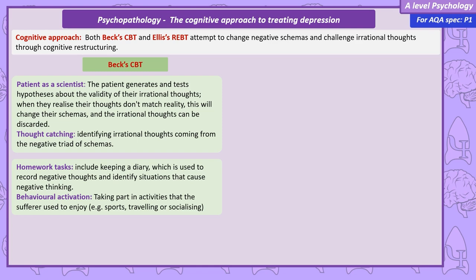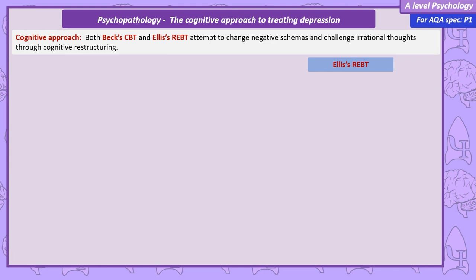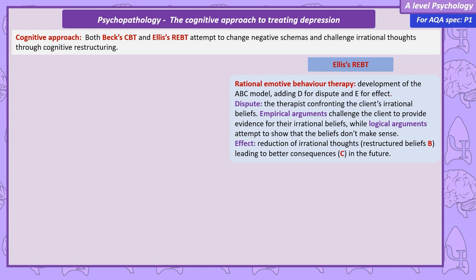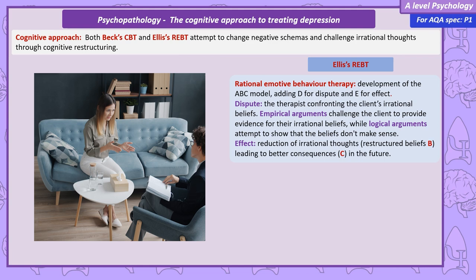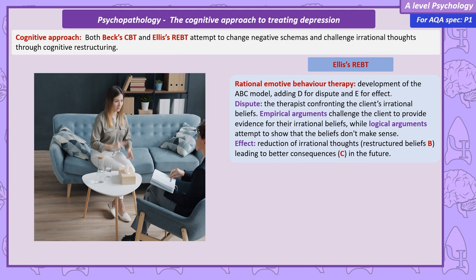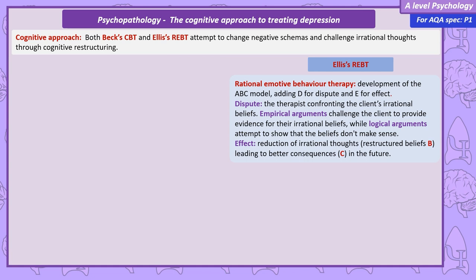Ellis' rational emotive behaviour therapy is the development of his ABC model, adding D for dispute and E for effect. These disputes take the form of the therapist confronting the client's irrational beliefs with empirical and logical arguments. Empirical arguments challenge the client to provide evidence for their irrational beliefs, while logical arguments attempt to show that the beliefs don't make sense. In the relationship example, the therapist would suggest that it's not logical to think they're fundamentally unlovable and will never be able to find someone who will stay with them — perhaps pointing to the fact they managed to start a relationship to begin with, so they'll be able to do it again. Empirically, the therapist might point to the evidence of many relationships failing, and the individuals in those relationships going on to have new, healthy relationships.